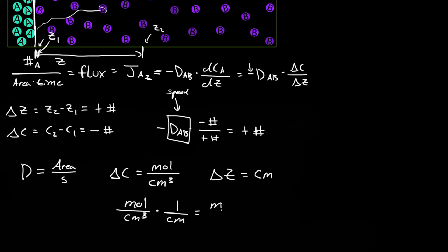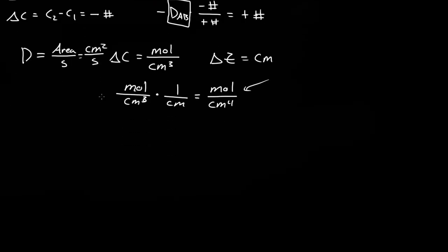And that will give us moles per centimeter to the fourth. And that's really odd. So that's why they actually have this. Or this is actually centimeters squared per second. So now if we multiplied this by D, by D's units, we would get moles per centimeter to the fourth, times these units, times centimeters squared per second. So this 4 cancels off that 2, and that now becomes a 2. So then we get moles per centimeter squared per second.